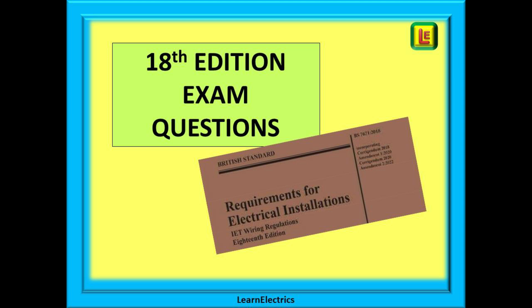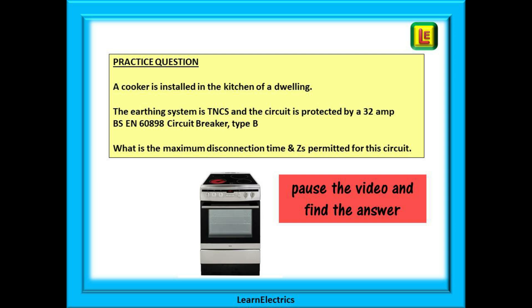Let's have a look now at some exam type questions. This question is related to ZS and disconnection times. A cooker is installed in the kitchen of a dwelling. The earthing system is TNCS and the circuit is protected by a 32 amp BS EN 60898 circuit breaker type B. The question is, what is the maximum permitted disconnection time and the maximum permitted ZS for this circuit? Pause the video and attempt the question.